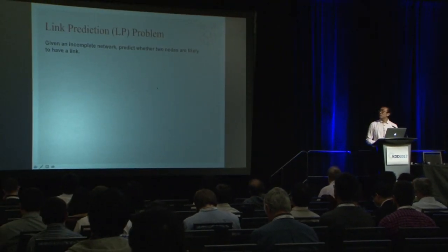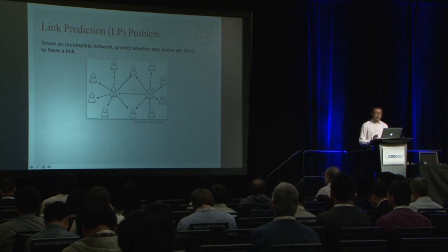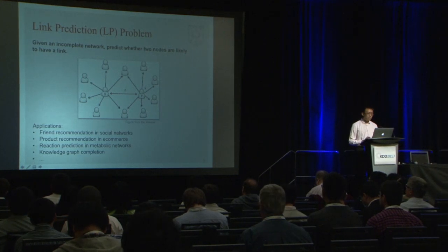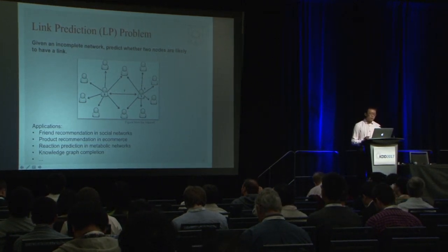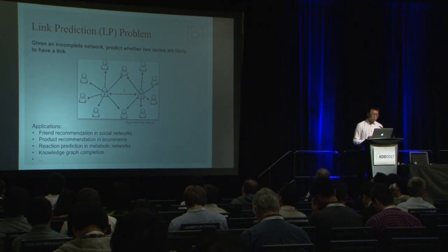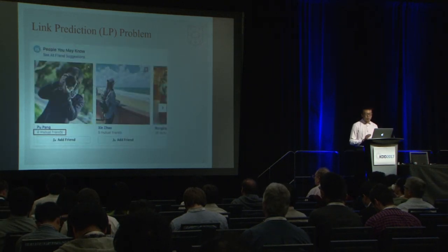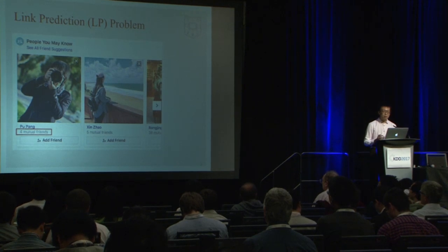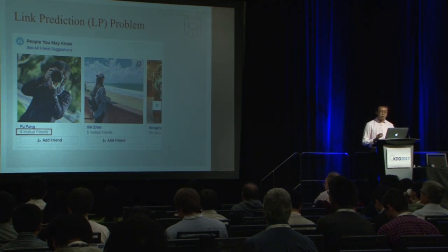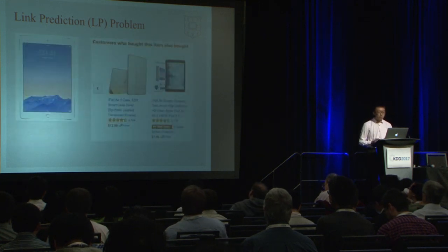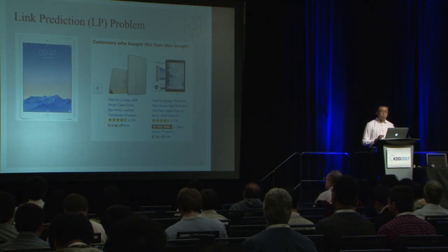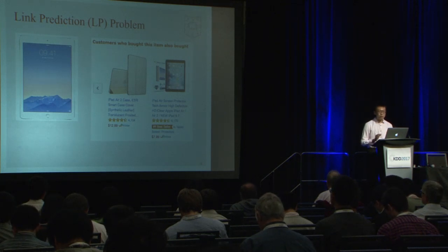Given an incomplete network, link prediction is to predict whether two nodes are likely to have a link. It has many applications such as friend recommendation in social networks, product recommendation in e-commerce, reaction prediction in metabolic networks, knowledge graph completion, and so on. For example, Facebook's friend recommendation system suggests people you may know by counting the mutual friends you share with them. Amazon's product recommendation suggests items frequently bought together with a product you buy — both are link prediction examples.